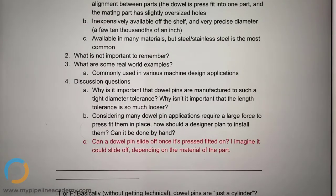Why is it important that dowel pins are manufactured to such a tight diameter tolerance? Why isn't it important that the length tolerance is so much looser?